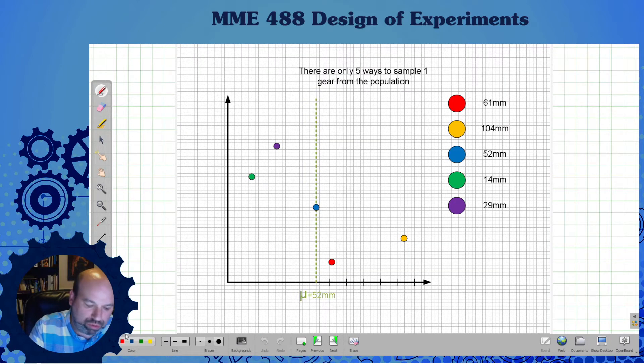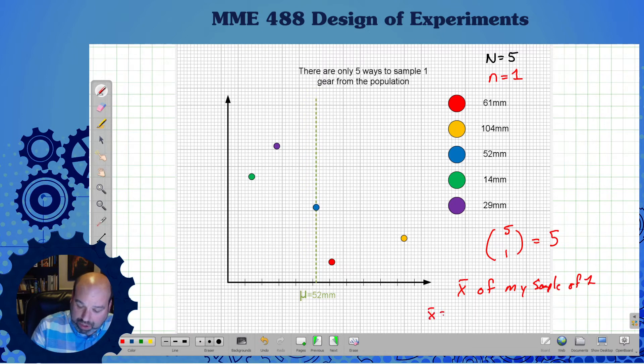We're going to do a sample of one. We have a population of five. I'm going to select one of those, little n equals one. I have five different ways I could sample those. The number of ways to sample this is five choose one. Five choose one is five. So there's five possible ways I could do this. Of those five possible ways, I could take each one and calculate the average of my sample of one, which is really easy because X-bar equals the sum of X over my little n. I'm basically getting X over one.